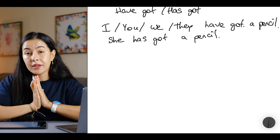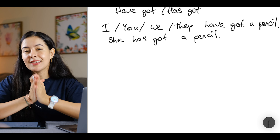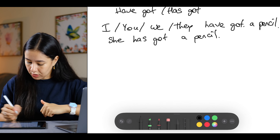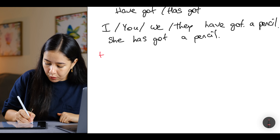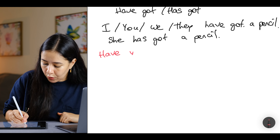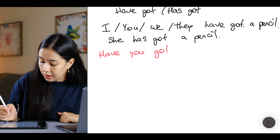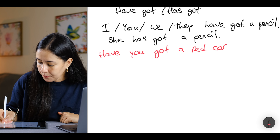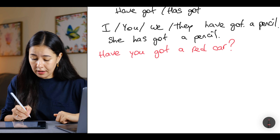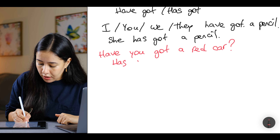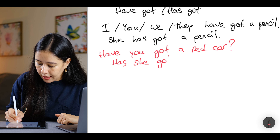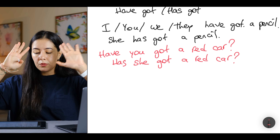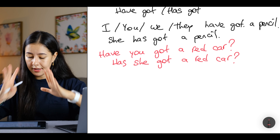For the negative form, we use 'haven't got' and 'hasn't got'. And for questions, we say: Have you got a red car? Or: Has she got a red car? So that was about 'have got' and 'has got'.